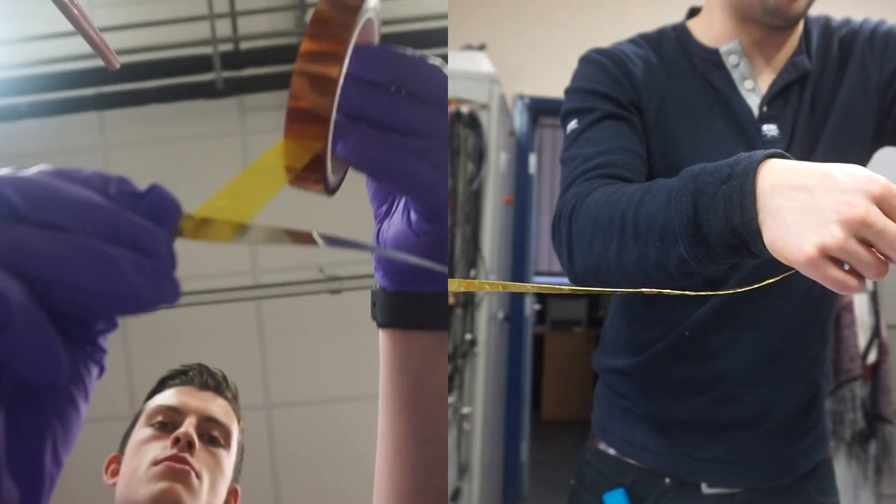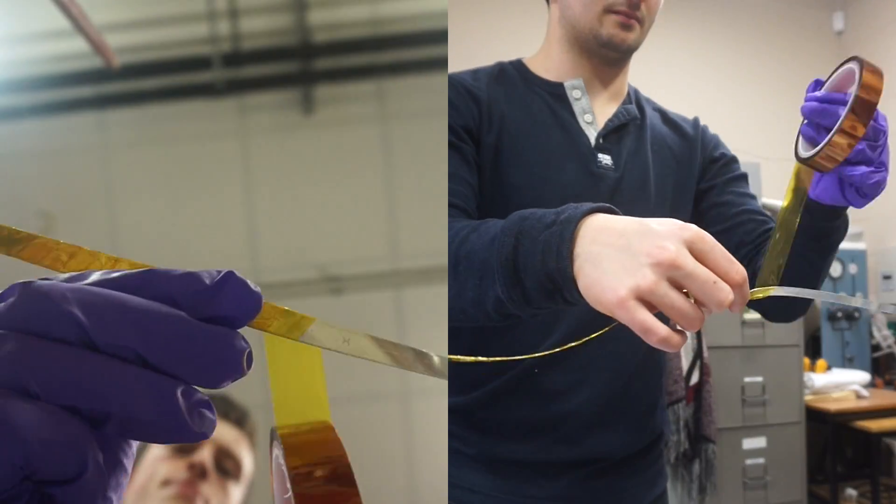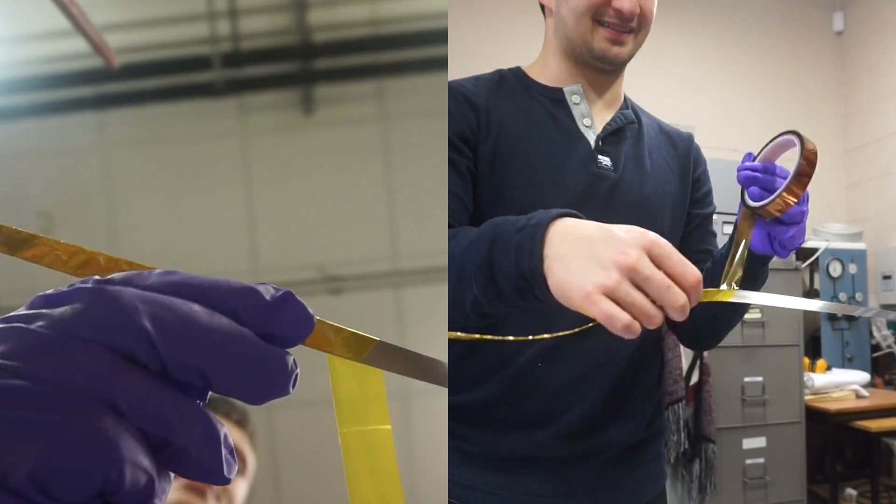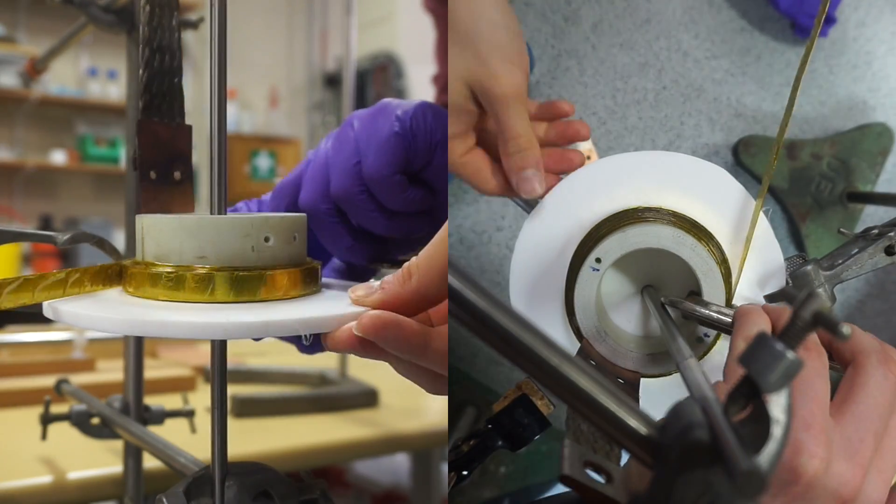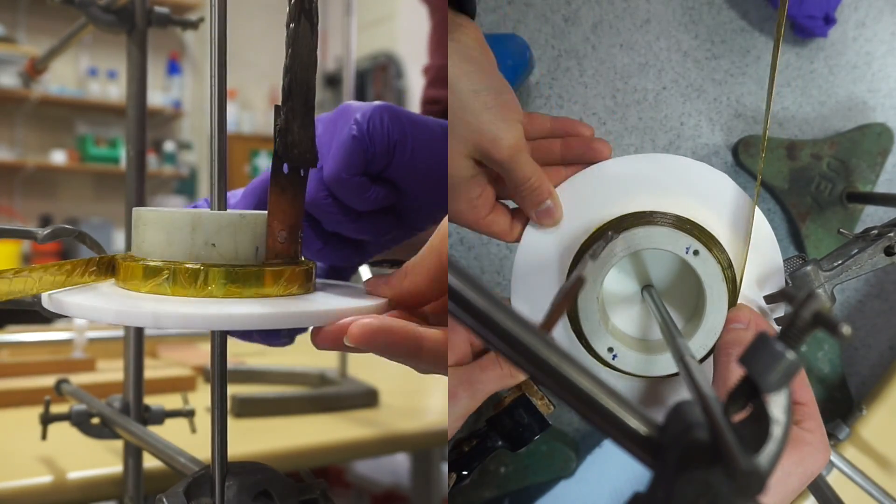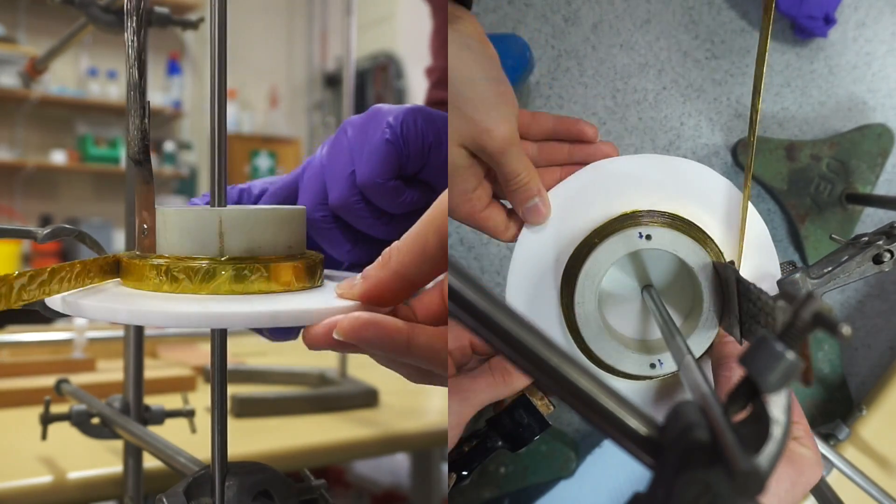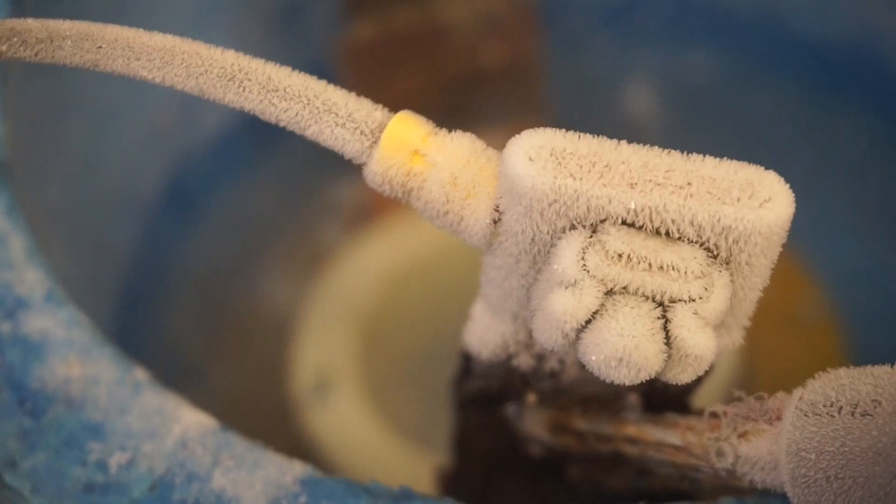As we were constructing the coil, we wrapped the superconducting wire in Kapton tape in order to insulate it. This protected the coil against short-circuiting. We then wind the tape onto the G10 former, making sure to keep the tension constant. A G10 former was used because it doesn't shrink when placed in liquid nitrogen.